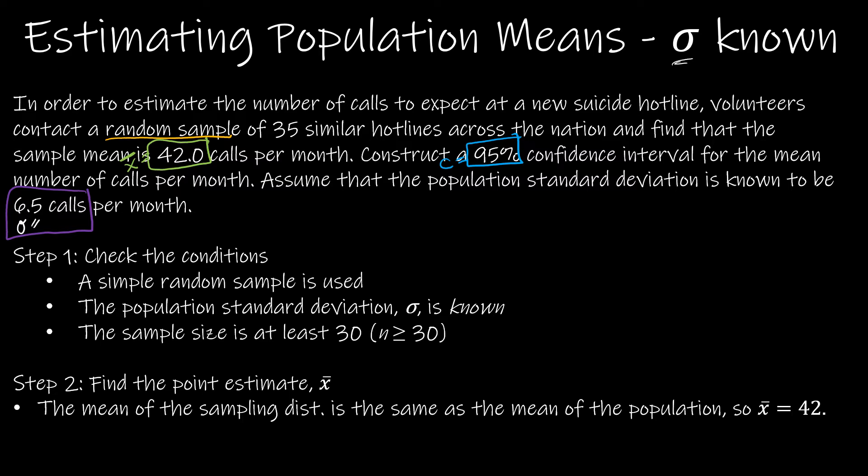So let's check conditions. First of all, is it a simple random sample? Yes, I underline that in yellow. Is the population standard deviation known? It is. They told us right here. And is the sample size at least 30? And yes, it is. And it's 35. So check, step one, check, check. We're okay.